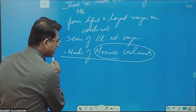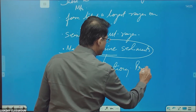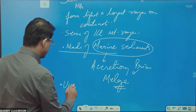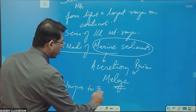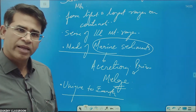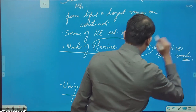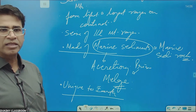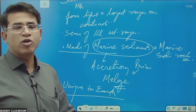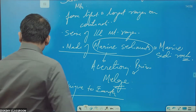These mountains are essentially made of an accretionary prism and melange. They are unique to Earth because no other surface that we know of has oceans like Earth. Marine sedimentary rocks are found here because, as of now, we do not know of oceans anywhere else in the universe.